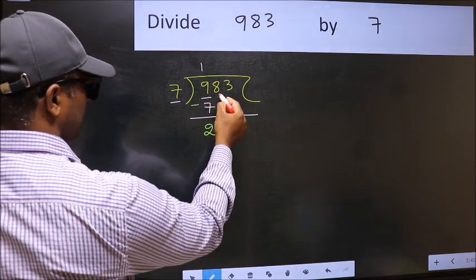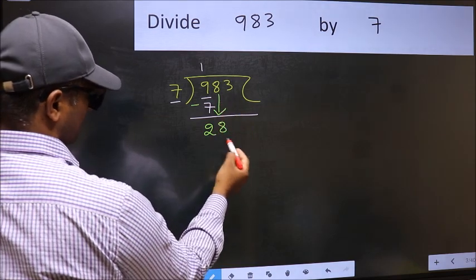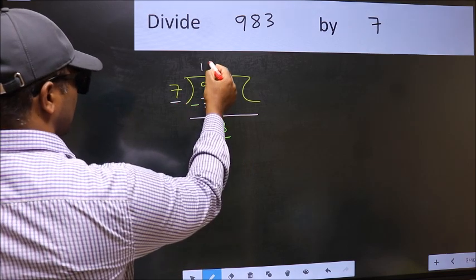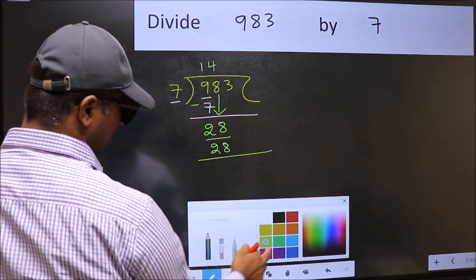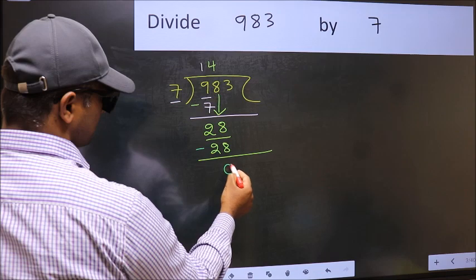After this, bring down the beside number. So 8 down. Now 28. When do we get 28 in the 7 table? 7 fours, 28. Now you should subtract. 28 minus 28, 0.